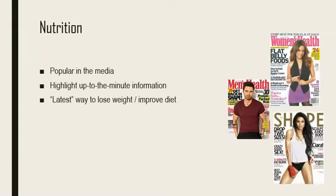News stories often highlight up-to-the-minute research. From magazines to newspapers and websites, there is a lot of information given to the public. It can be difficult to decide what to believe and trust from the media. There is always new and improved ways to improve your diet and the latest way to lose weight. Who do you trust? The best way is to use peer-reviewed journal articles — go to the source of what the media is using and read it yourself.